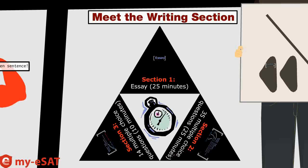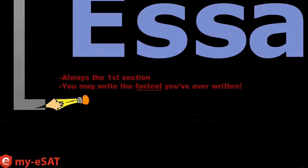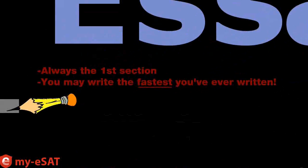You can see on the screen that the writing section is divided into three sections. The first section is a 25-minute essay. The essay is always the first section on the SAT, so it's always going to be the first thing you do when you begin the test. Many kids say that they wrote the fastest they have ever written in their entire lives on this essay, kind of like they were writing for their lives.